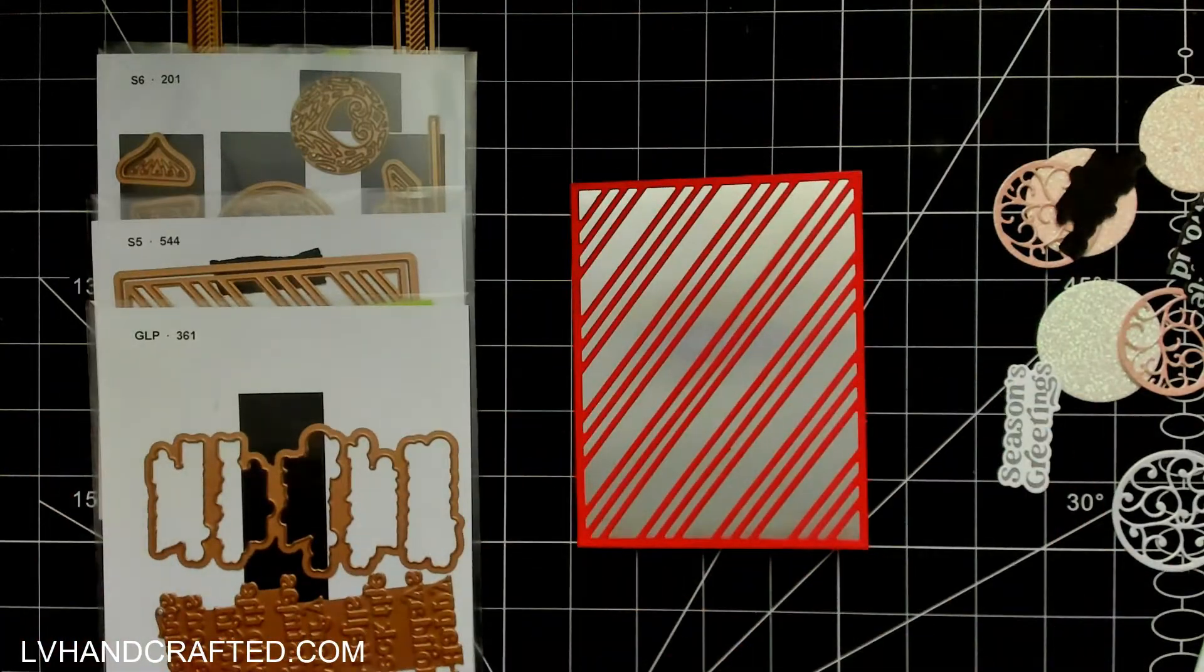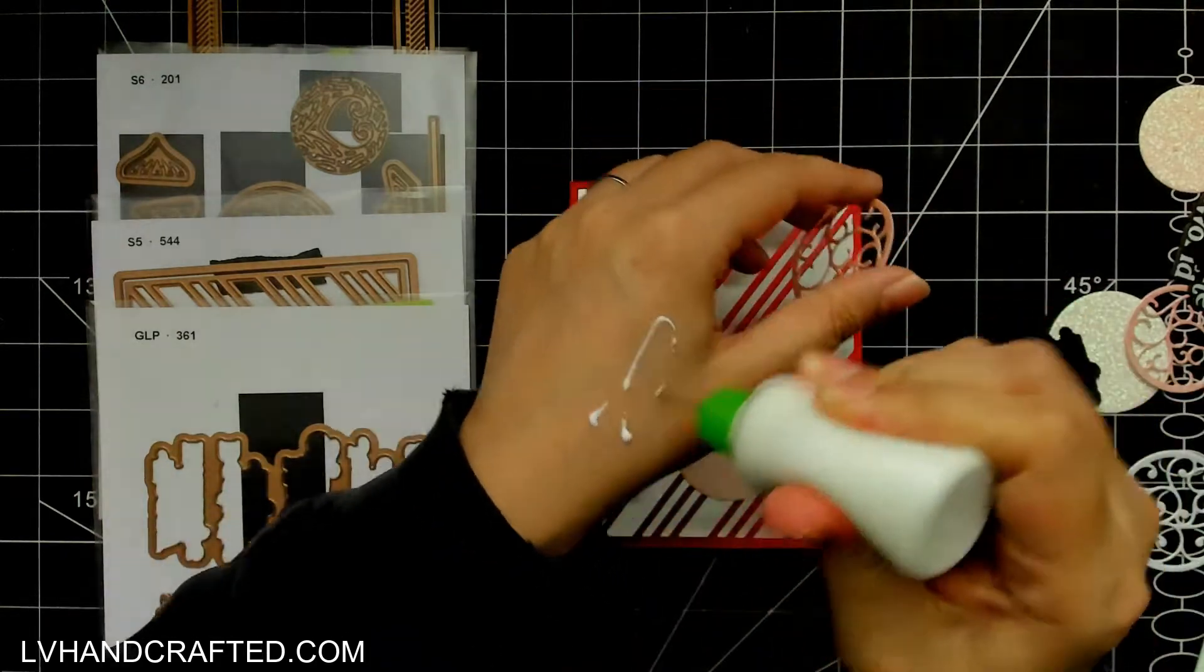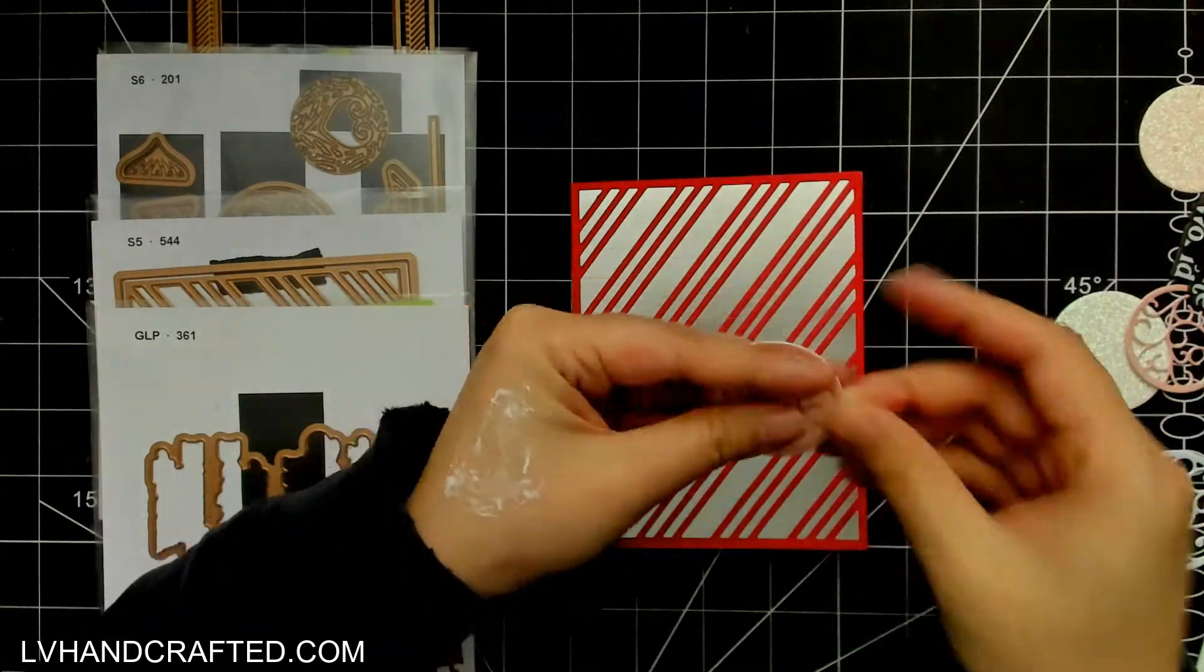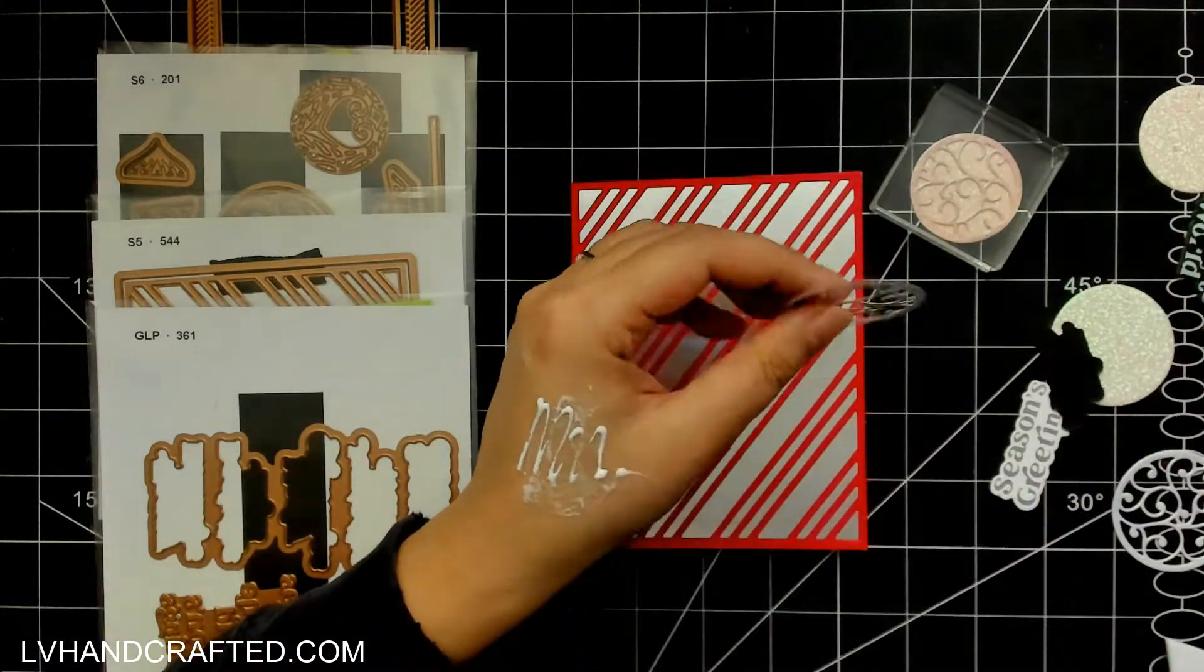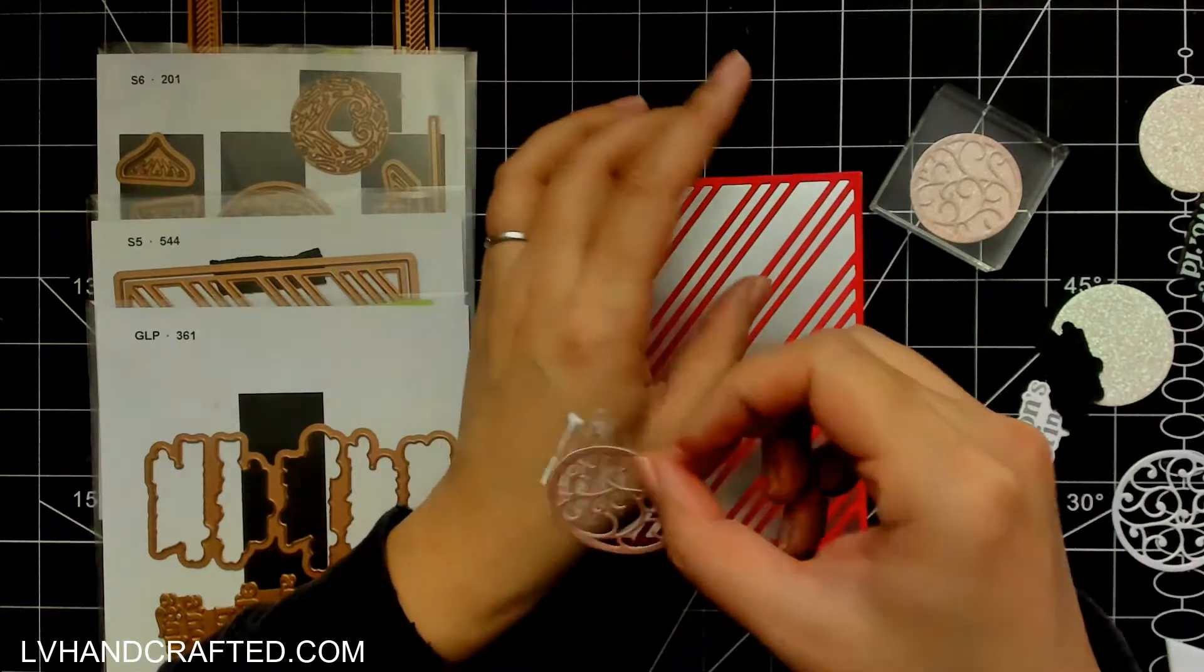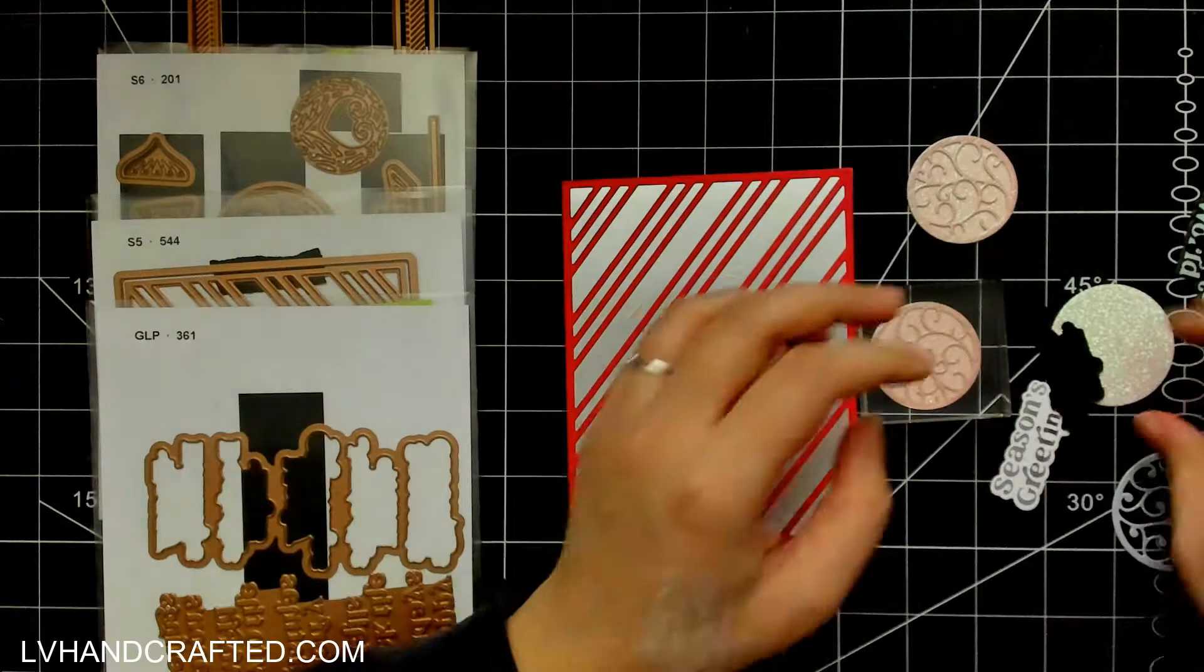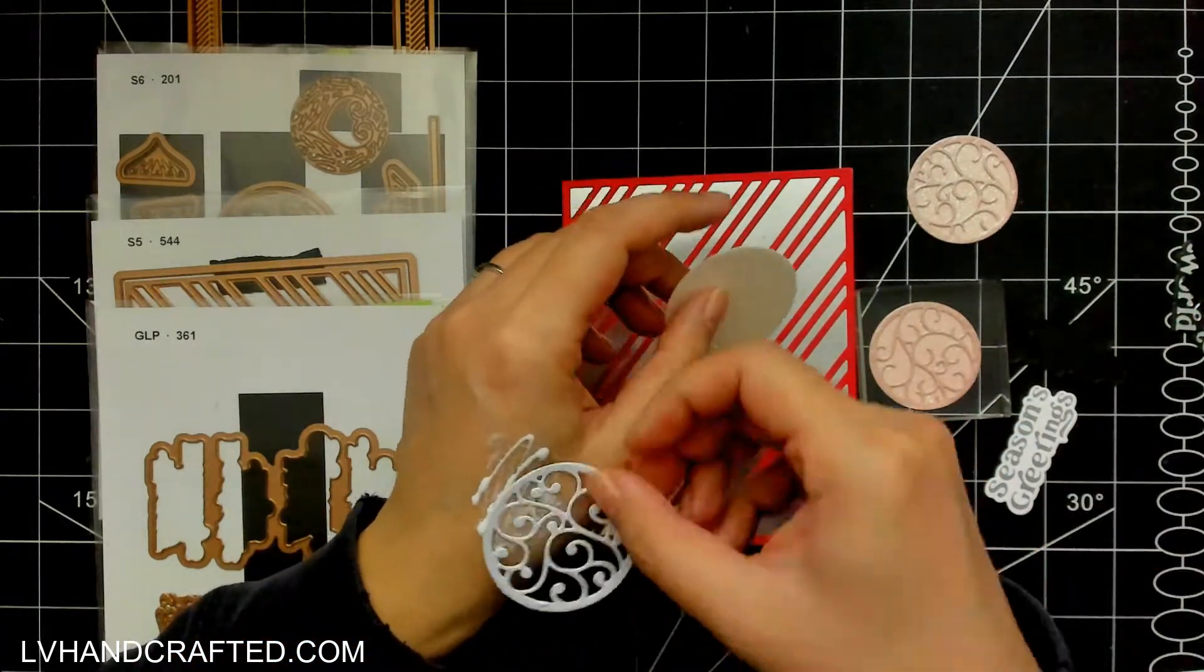But it does not have an outside cutting edge so when you combine the two this is the effect that you get but you could also just use that inner die that cuts out the candy stripes and just cut that pattern into your card if you want it and so there's different ways that you can use it.